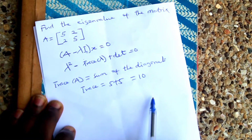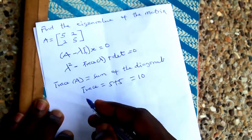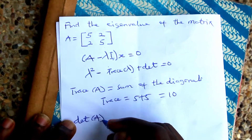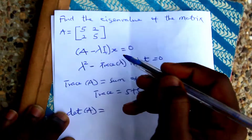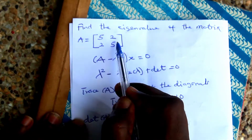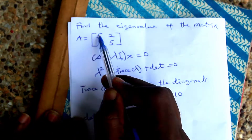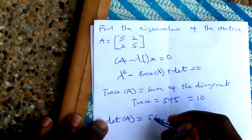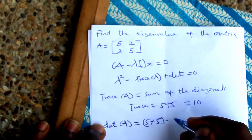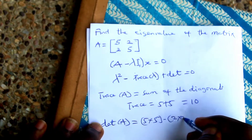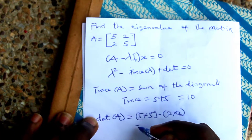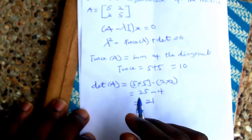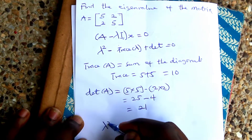For this 2×2 matrix, five plus five equals ten, so the trace is ten. The determinant of A is the product of the main diagonal minus the product of the off-diagonal: five times five minus two times two gives 21.